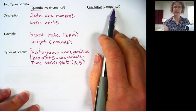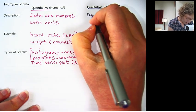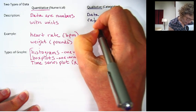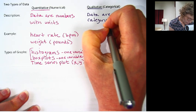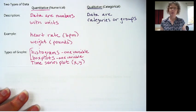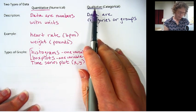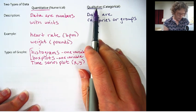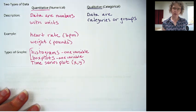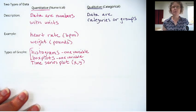You can probably guess from the name that these are categories. So the data are categories or groups. One way I remember this is qualitative, it has the word, or is close to the word quality. So we're recording some type of quality about someone. A category, a group, or a quality, versus a quantity, which would be a number.